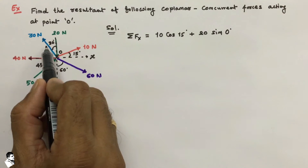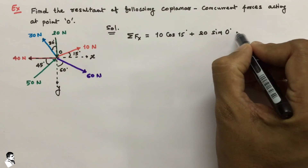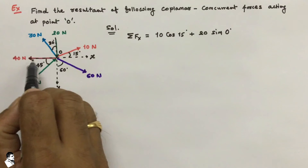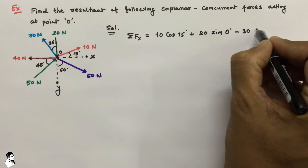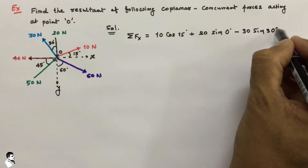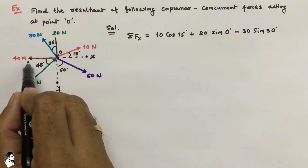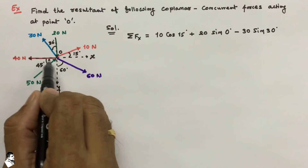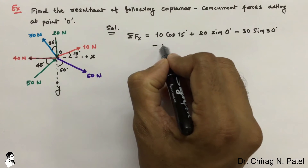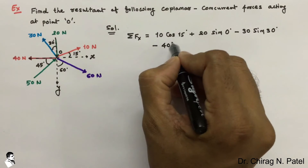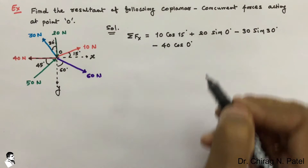For the 30 Newton force resolved along the X axis: this force is in the direction of the minus X axis, so we use a minus sign. That gives minus 30 sine 30 degrees. Next, for the 40 Newton force: that is also along the minus X axis, so we write minus 40 cos, and the angle is 0 degrees.